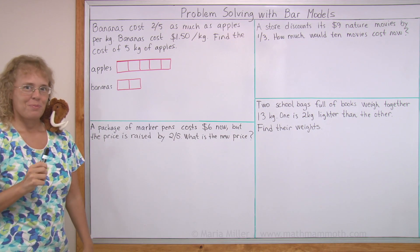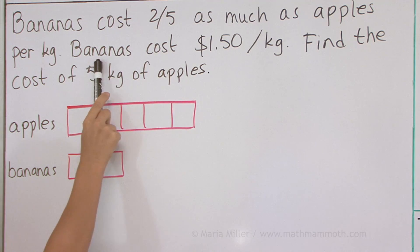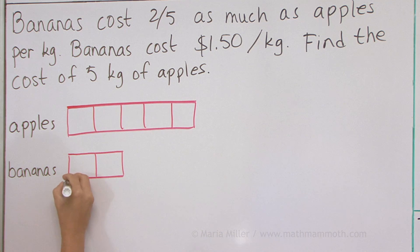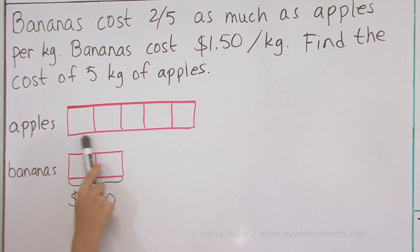What else do we know? It tells us that bananas cost $1.50 per kilogram. So we know this is $1.50. Two of my blocks are $1.50. And now we need to find the price of apples per kilogram, per one kilogram.